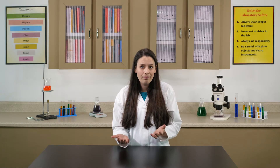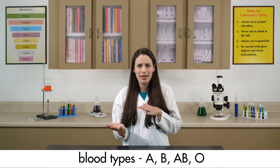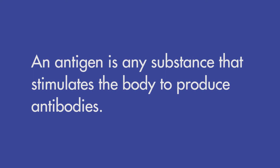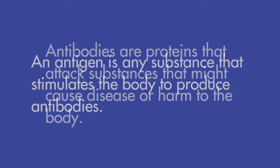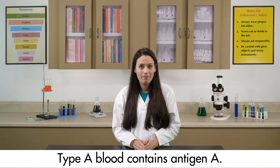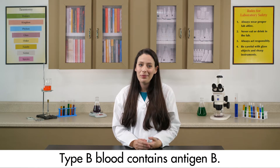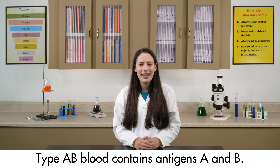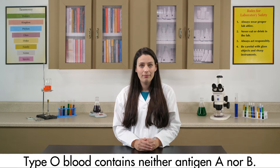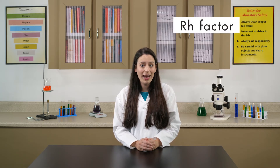What do we mean when we say blood type? All people have type A, B, AB, or O blood. Each blood type is determined by the presence of certain antigens. An antigen is any substance that stimulates the body to produce antibodies. Antibodies are proteins that attack substances that might cause disease or harm to the body. Type A blood contains antigen A, type B blood contains antigen B, type AB blood contains both antigens A and B, and type O blood contains neither antigen A nor B. Type A blood may also contain another antigen called the rhesus factor, or Rh factor.